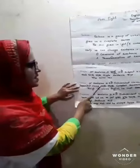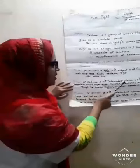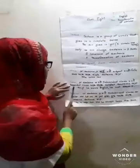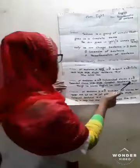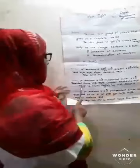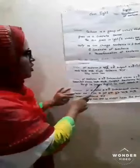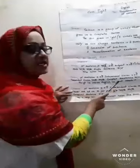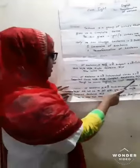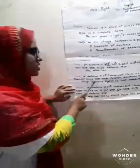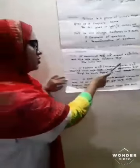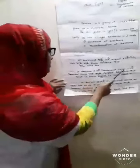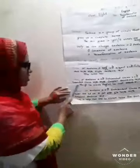Now for a complex sentence: a complex sentence has one independent clause and one dependent clause. For example, 'Though he knows English, he can't speak it.' Here the independent clause is the main clause and the dependent clause depends on it.